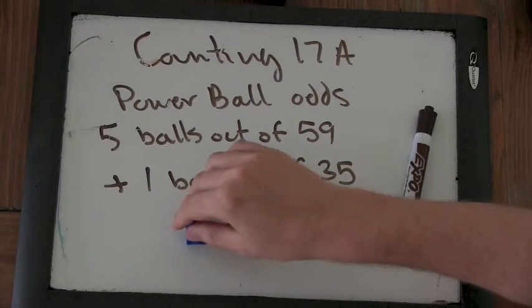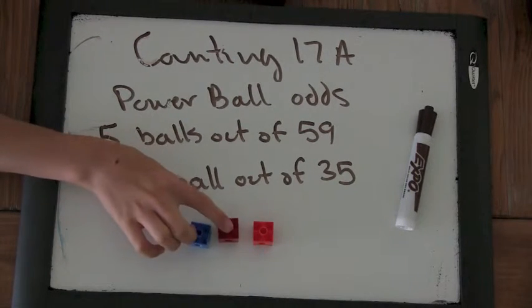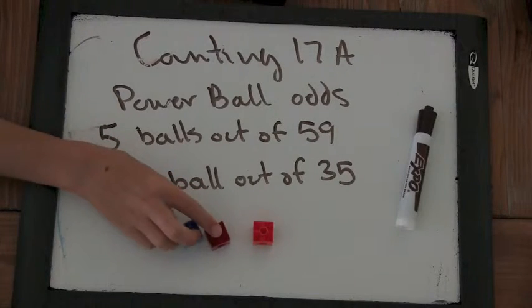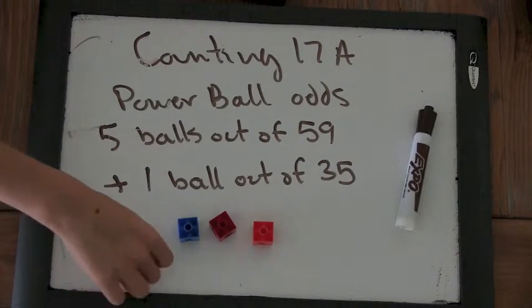So how many ways are there to arrange these three snap cubes in a line if order matters? Well, then you can arrange them six different ways. You have three choices for the first one, two, and then one. Right.